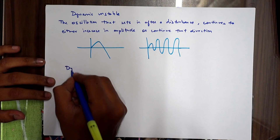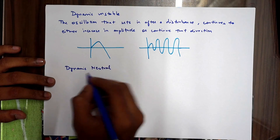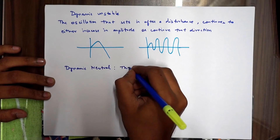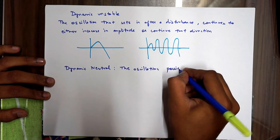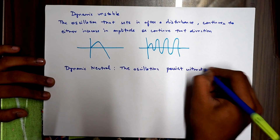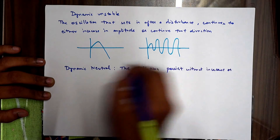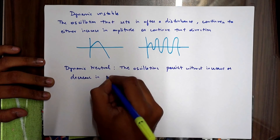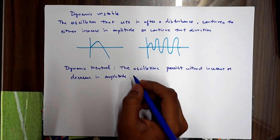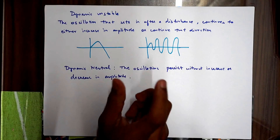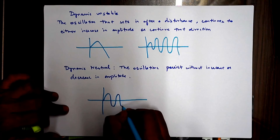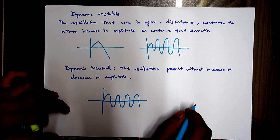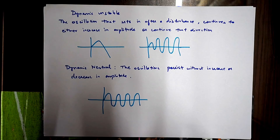The last dynamic type is dynamically neutral — when the oscillations persist without increase or decrease in amplitude, the aircraft is said to be dynamically neutral. For example, if you have a certain disturbance, the aircraft will just stay at a constant amplitude without increasing or decreasing.